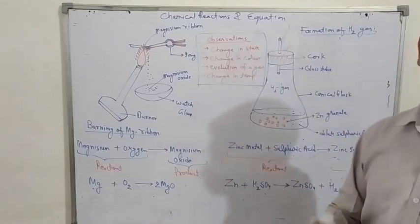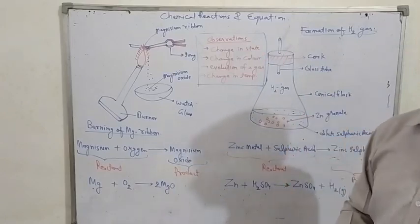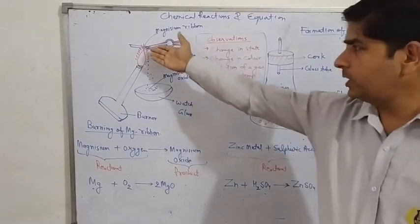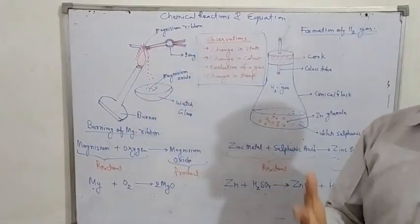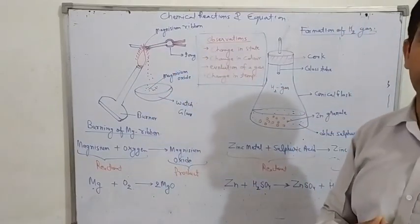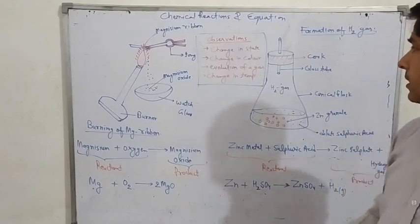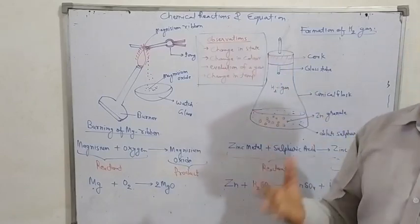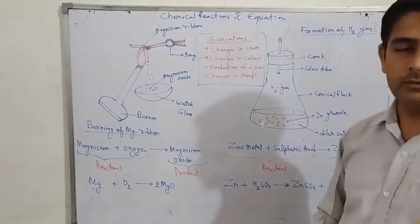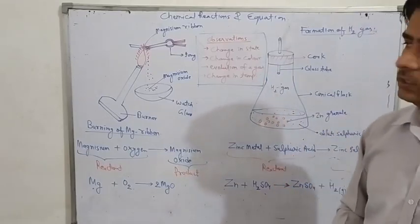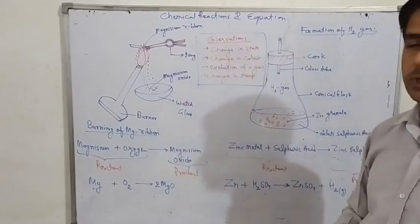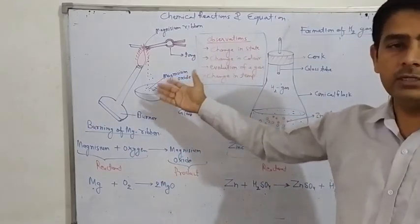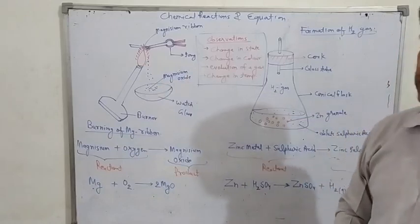One of the observations is change in state — the physical state is changing, such as solid changing to liquid, gas, or powder during a chemical process. The second observation is change in colour, which can also be observed. For example, when you burn the magnesium ribbon, the ash formed changes colour.